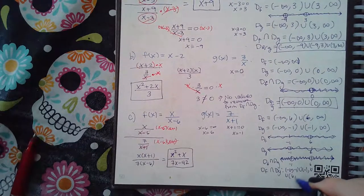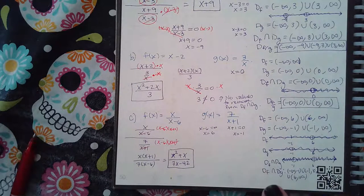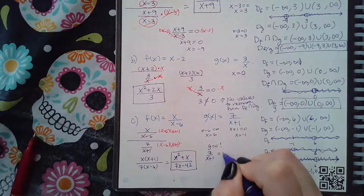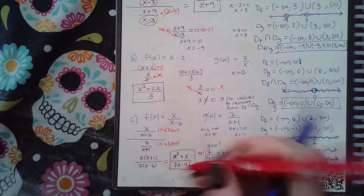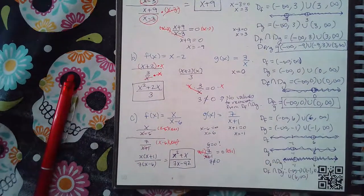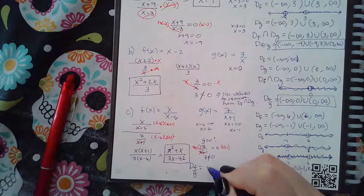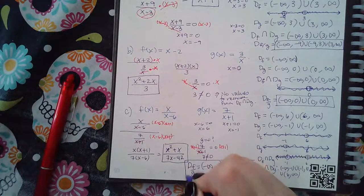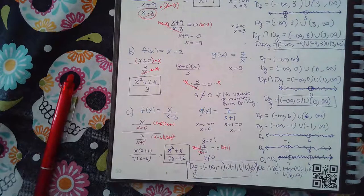In interval notation, the domain of f intersect g is negative infinity to −1, then −1 to 6, then 6 to infinity. We also need to remove wherever g equals zero. Setting 7/(x+1) = 0 and multiplying by the common denominator gives 7 = 0, which can't happen — so there's nothing extra to remove. The domain of f over g is therefore negative infinity to −1, −1 to 6, and 6 to infinity. That covers all three different cases.